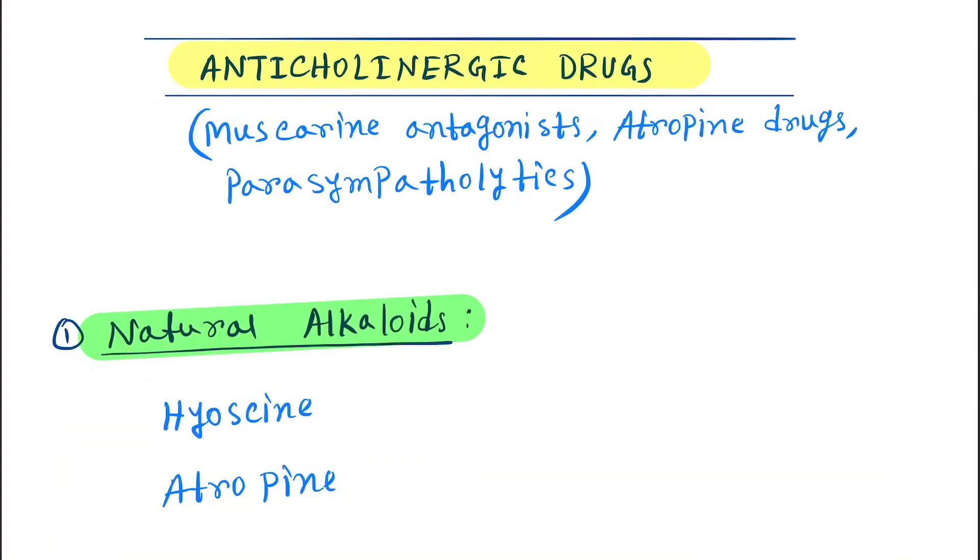Okay, so hello friends. Today our topic is the anticholinergic drugs. They are also called the muscarinic antagonists, atropine drugs, and the parasympatholytics.